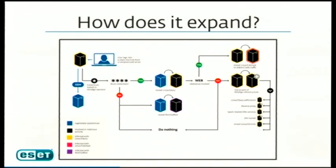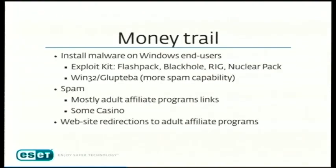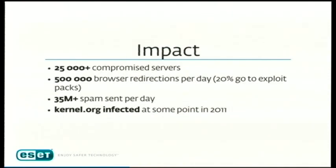How do they have so many root credentials? Looking at our stolen credential analysis, 40% of stolen credentials are root credentials, which is what allows them to spread. The money trail: exploit kit → Windows malware → spam and adult affiliate programs. The overall impact: over 25,000 compromised servers, half a million browser redirections per day with 20% going to exploit packs, 35 million spam messages sent daily. Kernel.org was infected at one point, and we had contacts confirming Ebury was involved in that incident.